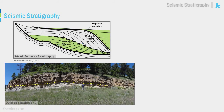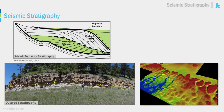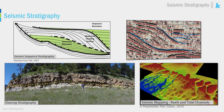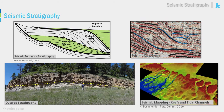Seismic stratigraphy was first developed as an interpretation technique in a series of papers by Peter Vail and colleagues in 1977. The authors recognized that seismic reflections are generated by bedded sedimentary rocks, and that the same types of stratigraphic patterns and concepts observed on the surface could be recognized and interpreted in seismic data.